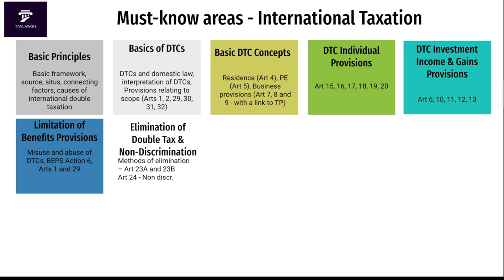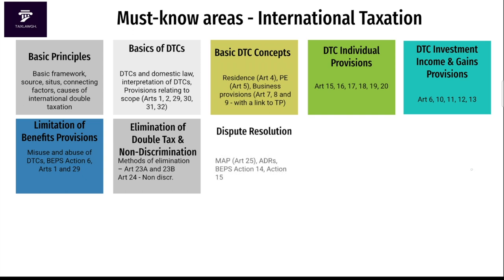One of the main purposes of double tax treaties is the elimination of double taxation. You need to know how the OECD Model Tax Convention goes about eliminating double taxation — specifically the methods proposed under Articles 23A and 23B — as well as the non-discrimination provisions under Article 24. Dispute resolution mechanisms are also important, including the mutual agreement procedures under Article 25 and alternative dispute resolution under BEPS Actions 14 and 15.